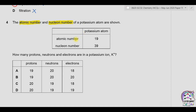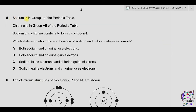Question four: the atomic number and nucleon number of a potassium atom are shown — atomic number is 19 and nucleon number is 39. How many protons, neutrons, and electrons are in a potassium ion? There are 19 protons. Neutrons = 39 − 19 = 20. As there is a positive charge on the potassium ion, one electron is lost, so there are 18 electrons present. Therefore option A is correct.